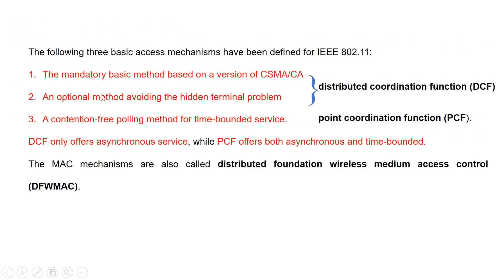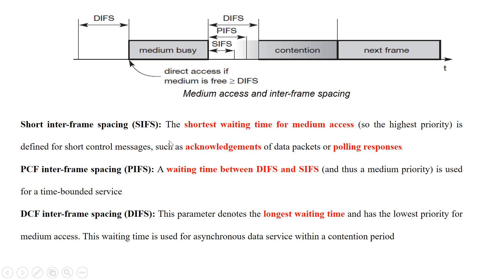Three basic mechanisms are defined for IEEE 802.11. The first is a mandatory basic method based on carrier sense multiple access with collision avoidance. The second is an optional method for avoiding the hidden terminal problem. The first two methods use the distributed coordination function. The third is a contention-free polling method for time-bounded service, which uses the point coordination function.